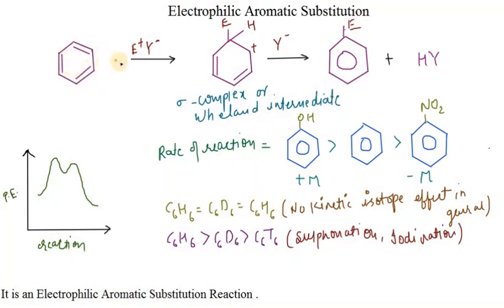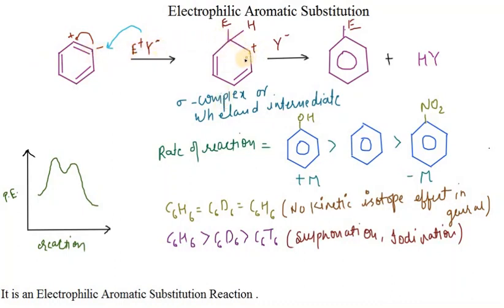When we supply temperature to the reaction, the reaction will proceed in the forward direction by breaking a bond — one end has a positive charge and one has a negative charge. The electrophile attacks first because of the electron density, and a positive charge forms on the ring.